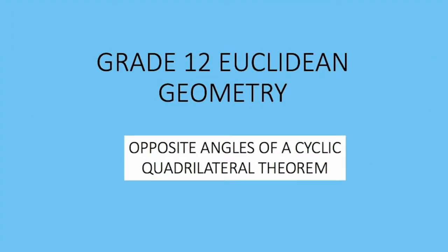We are doing Grade 12 Euclidean geometry. We are particularly going to look at the theorem that states that opposite angles of a cyclic quadrilateral are supplementary.